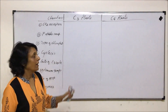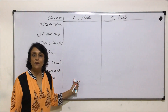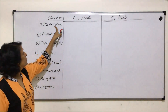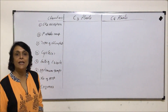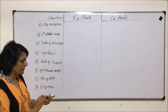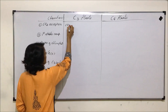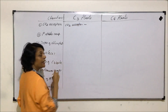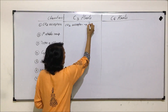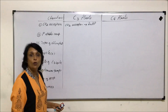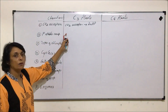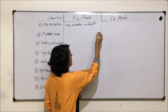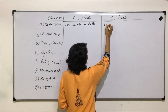Let us now compare what happens in C3 plants and C4 plants. The first point we want to compare is the carbon dioxide acceptor. In C3 plants, carbon dioxide is accepted by RUBP, that is ribulose biphosphate. In C4 plants, the first carbon dioxide acceptor is phosphoenol pyruvate.